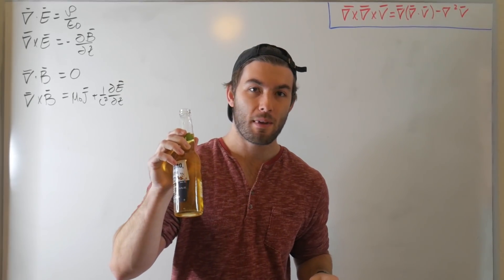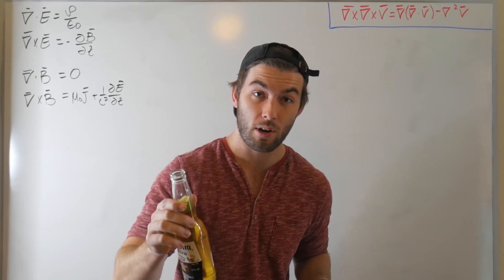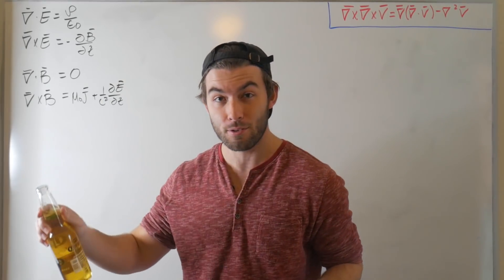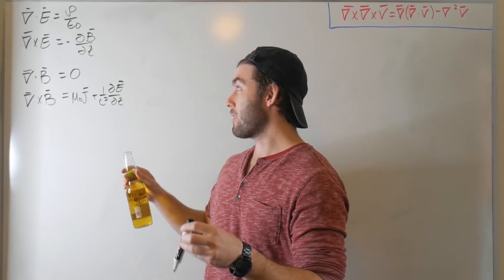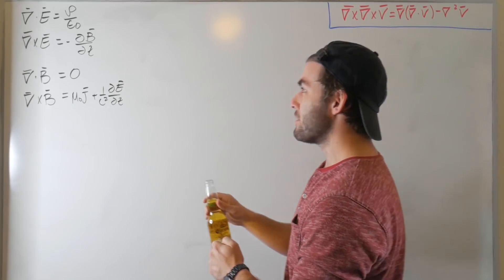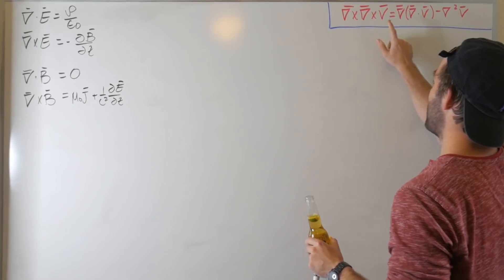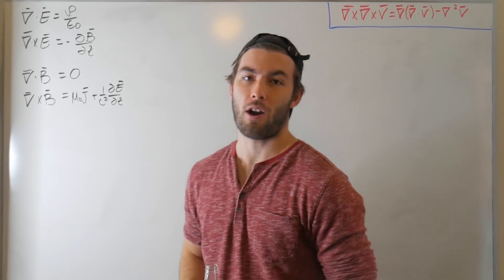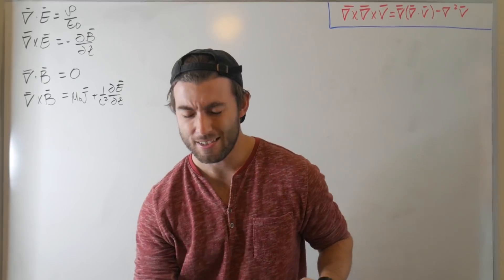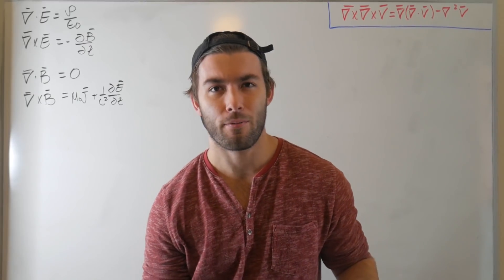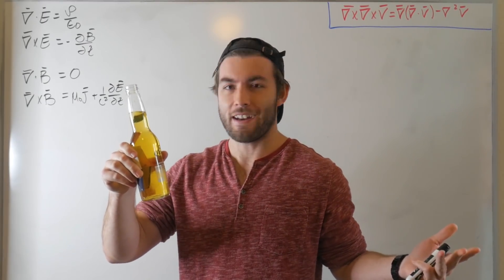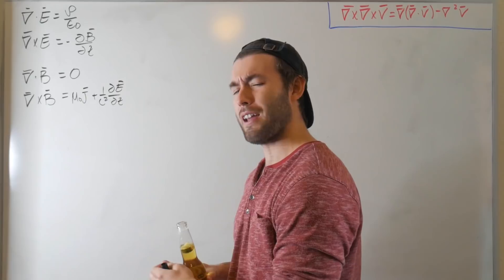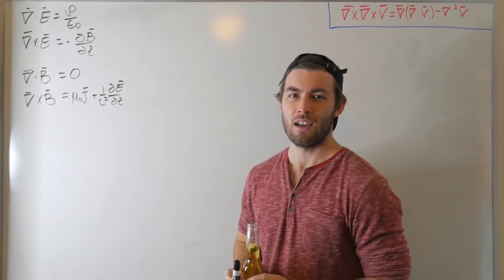Today we're going to be deriving Maxwell's wave equations for electric and magnetic fields. And we're going to do it using nothing but this curl double product identity here. It's a really simple derivation — I don't know how far I'll get into this beer, it's pretty fast, but we'll see how everything goes.